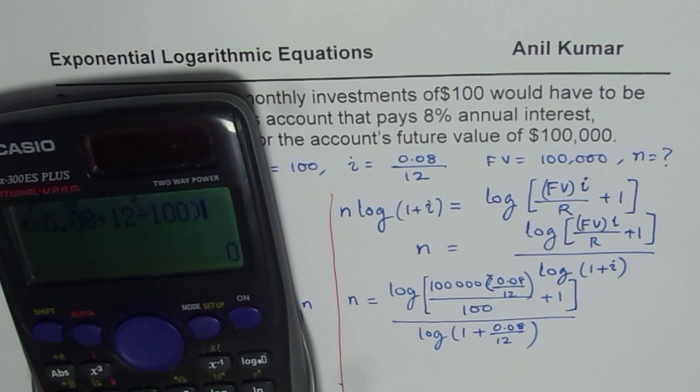We will close this bracket. So we have the first function plus 1, bracket close. That is the numerator, divided by log of 1 plus 0.08 divided by 12, bracket close. So this is the denominator.